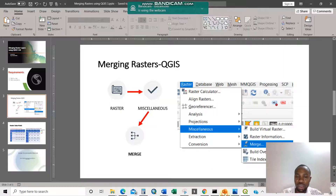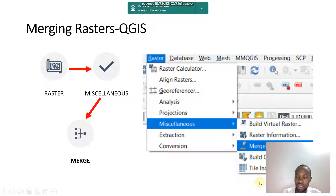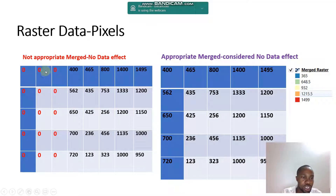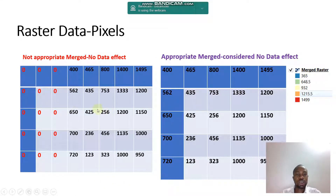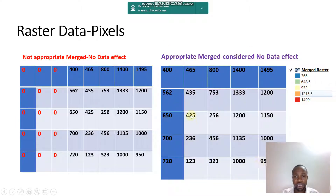Getting back to our PowerPoint, I can explain this. What happened is there are zero values, so it just merged all these zeros. These are the pixels representing elevation, and it has tried to merge all of them, combining the rasters into one single merged file.